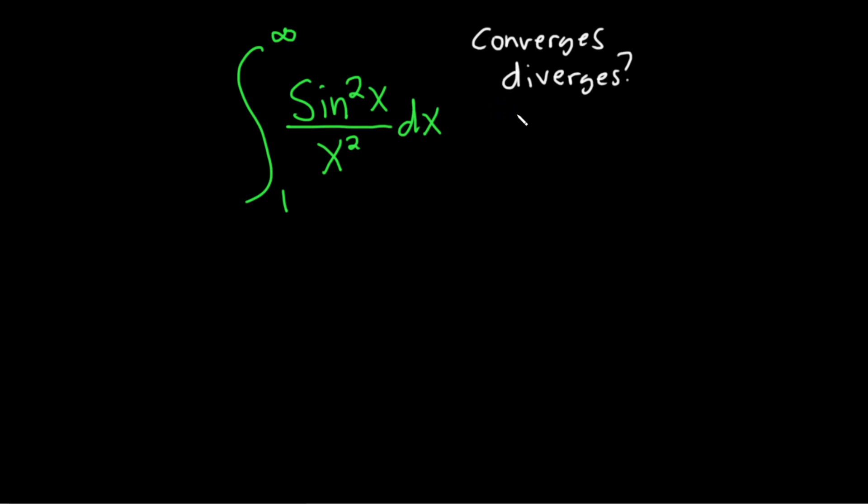So the first convergence test we should know about is called the p-test. The p-test basically says if you have the improper integral say from one to infinity, and you can use any number here, a positive number will work, x to the p,